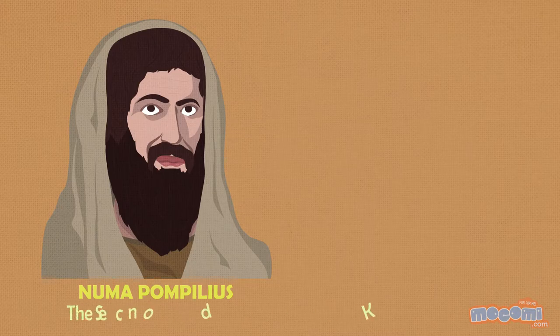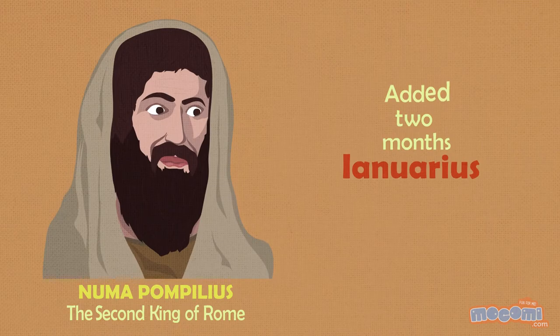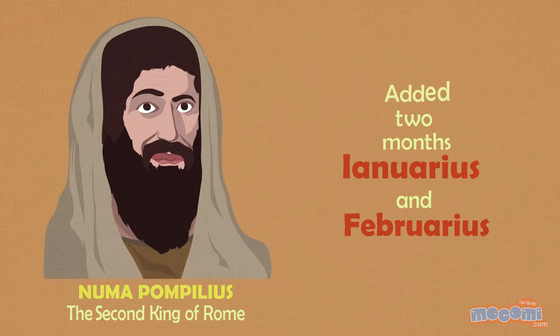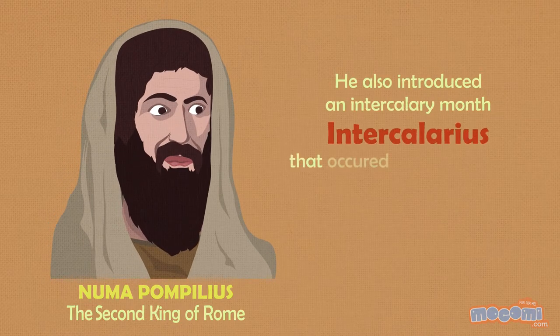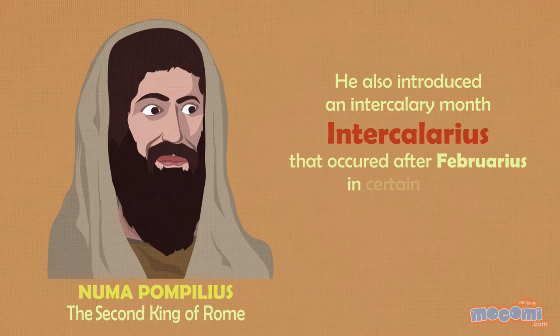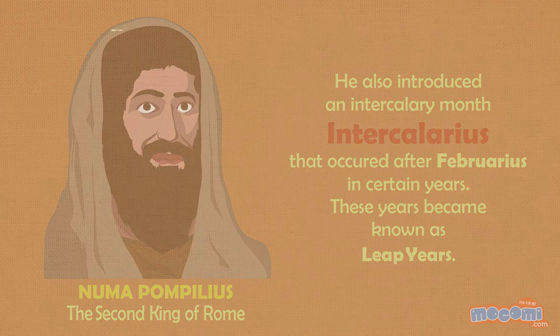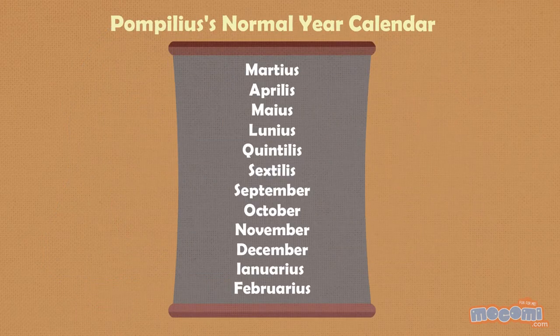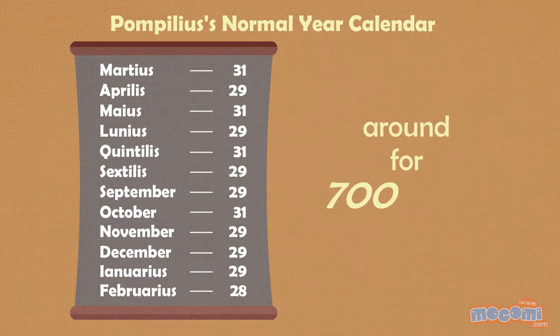The calendar was later modified because it accounted for only 304 days in a year. So, what happened to the leftover 61 days? The second king of Rome Numa Pompilius added two months at the end of the calendar, Januarius and Februarius, to account for the missing days. He also introduced an intercalary month that occurred after Februarius in certain years. These years became known as leap years. In addition, he deleted one day from all the months that had 30 days so that they had 29 days instead for 700 years.